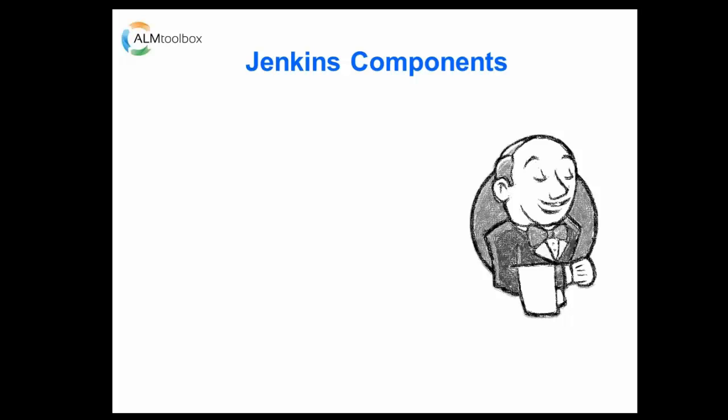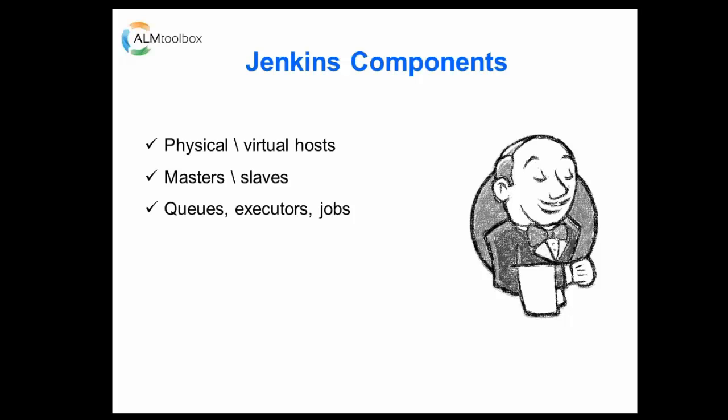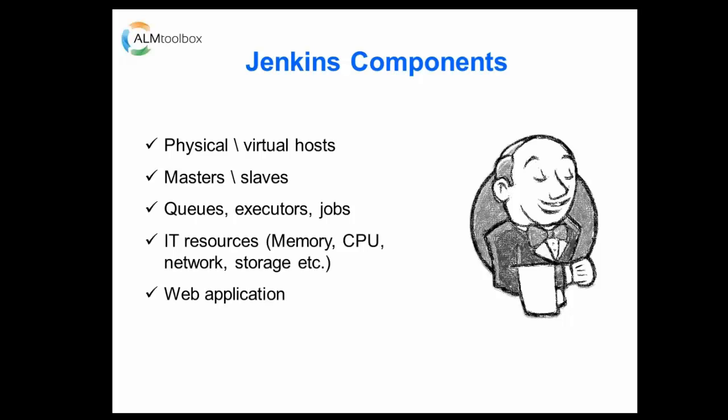Now let's start talking about the best practices for Jenkins. We will start with mapping Jenkins' main components — we will not cover all of them in this webinar — and explain what is important to monitor for each one. In the monitoring tool we will present in just a few minutes, we are monitoring most of them. Among the components to monitor: physical and virtual hosts that can function as Jenkins masters or slaves; queues for running jobs and internal Jenkins tasks; infrastructure resources like memory, CPU, and storage; and the application infrastructure including the web application and the JVM.